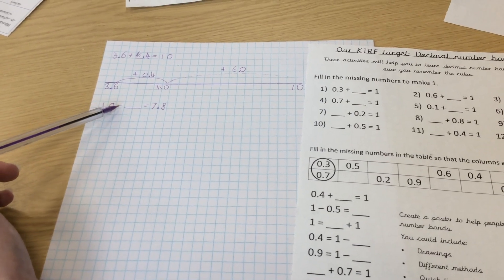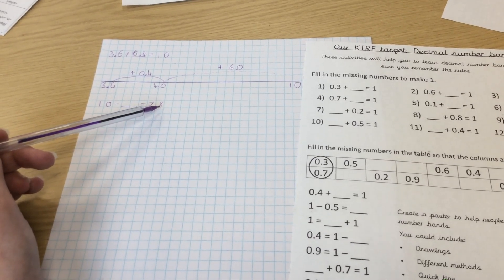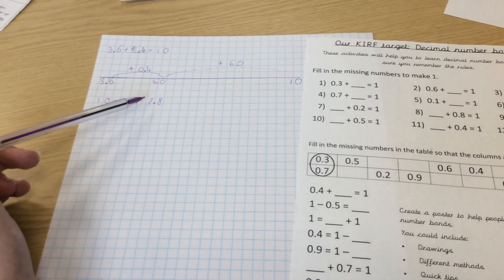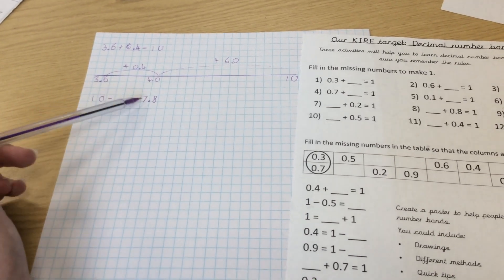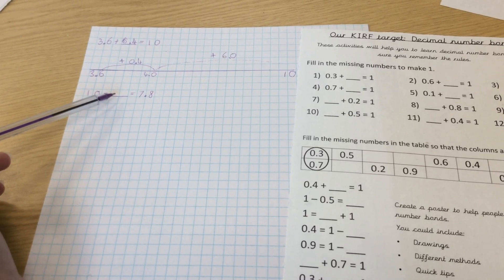So you're going to do exactly the same strategies to find this missing number, but your calculation is just written a different way around. Don't let this throw you off because actually we still need to do the same calculation.